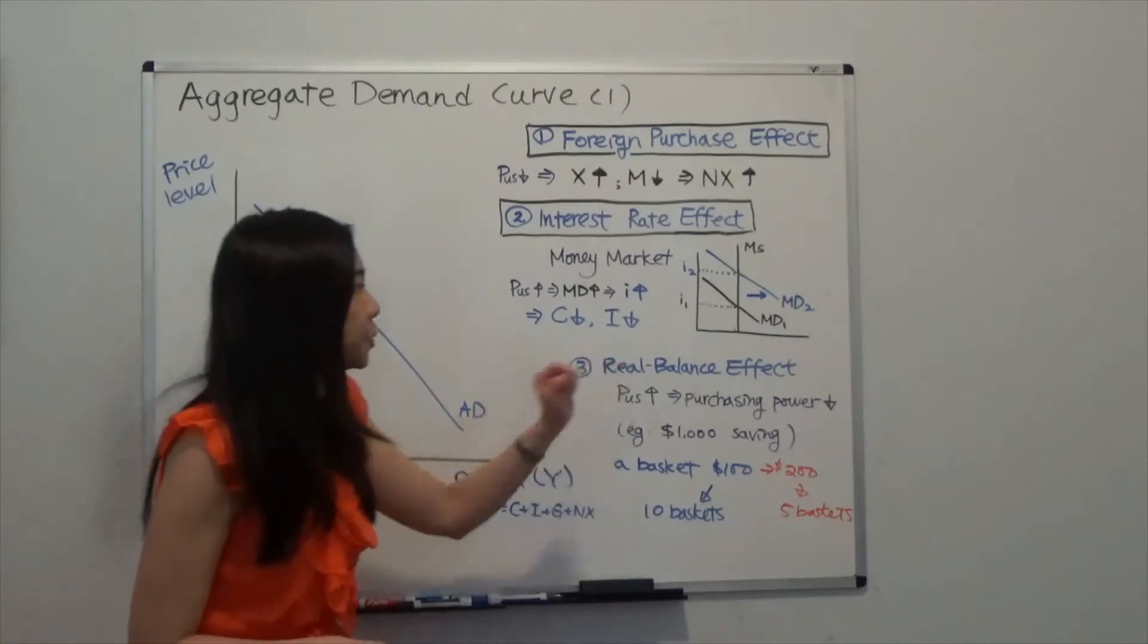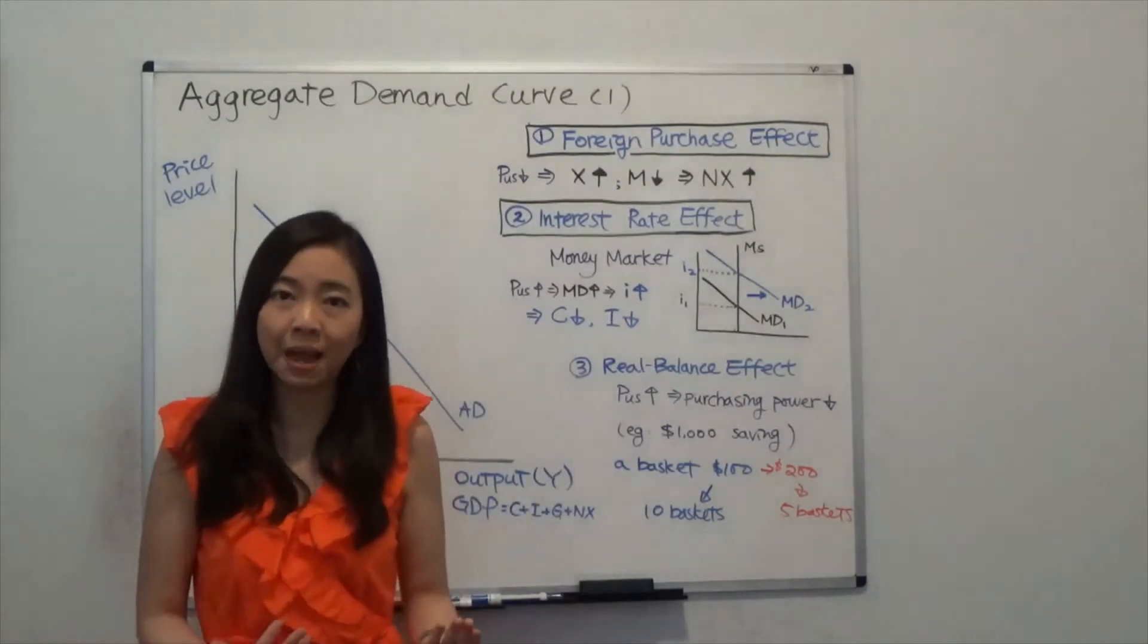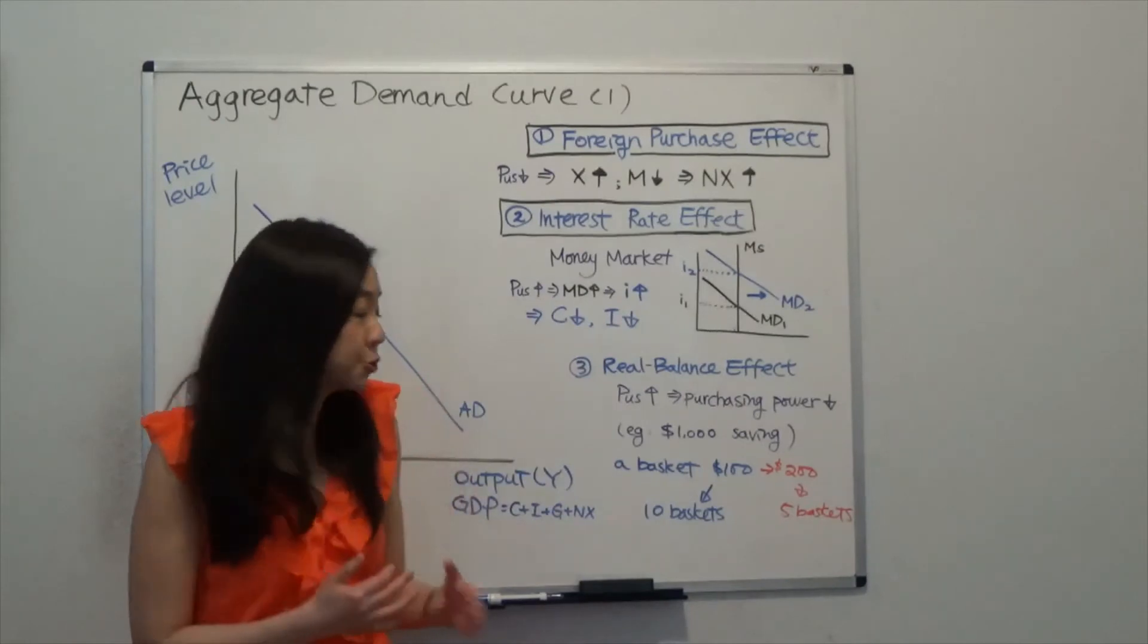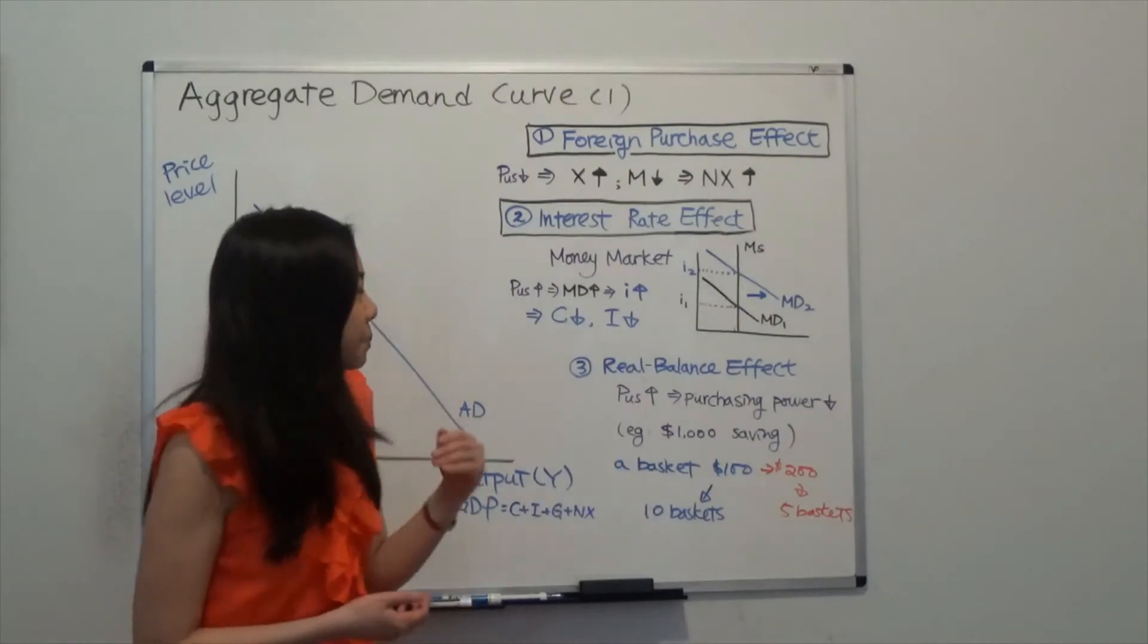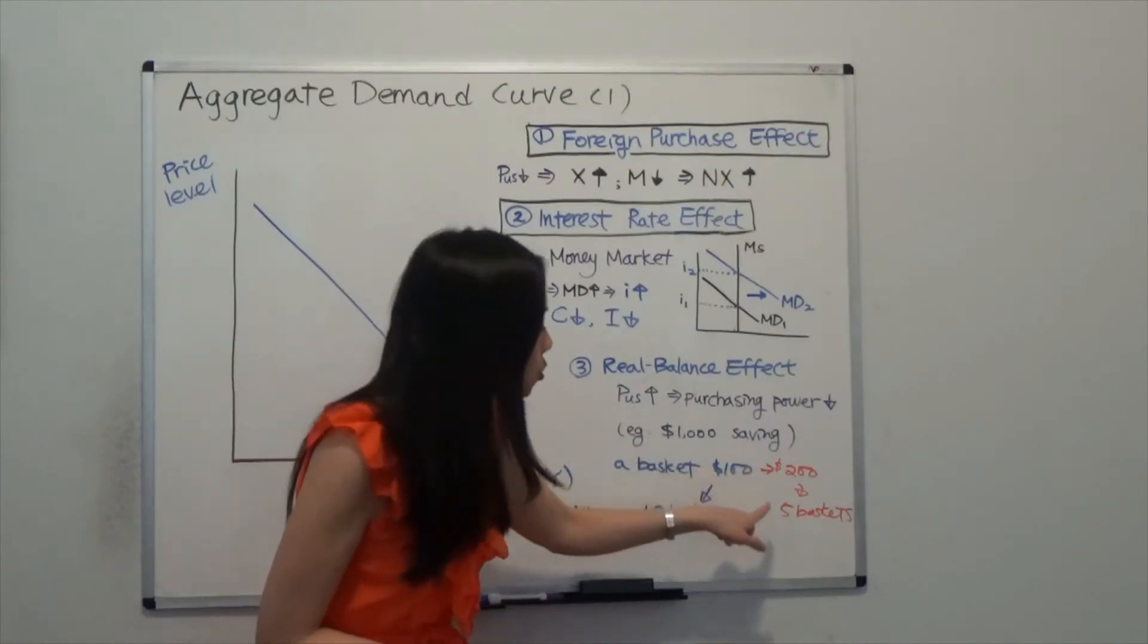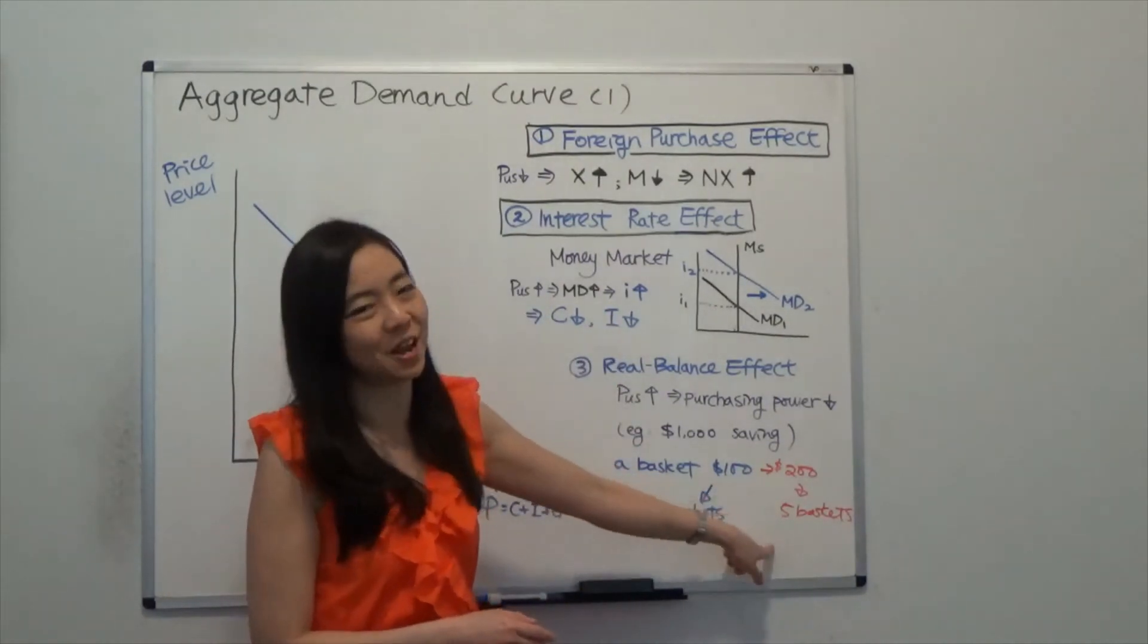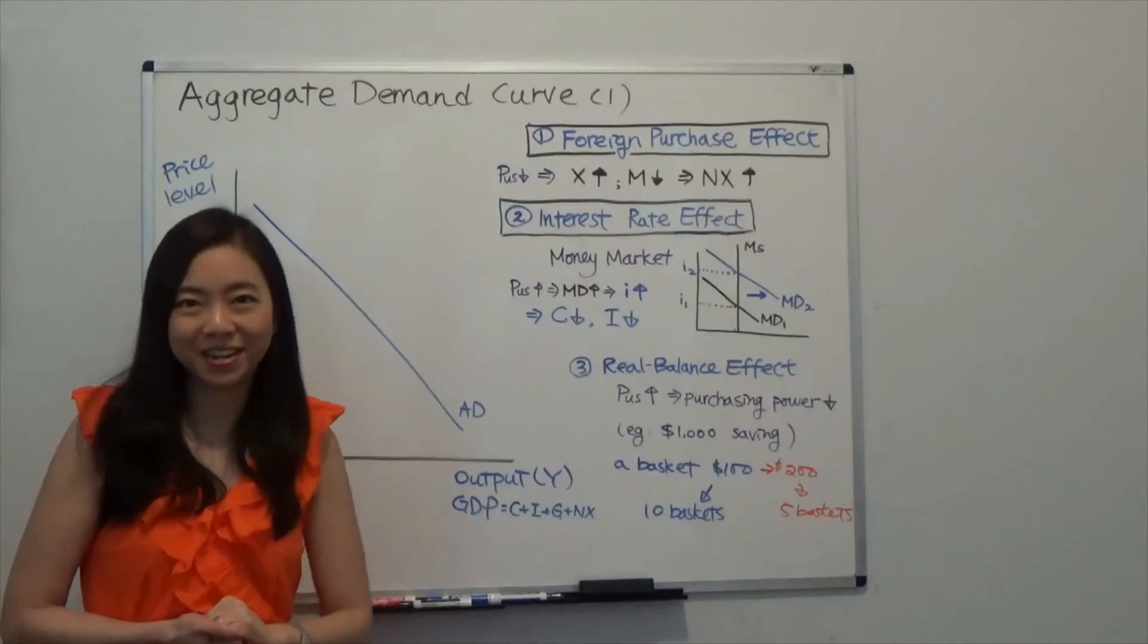The third is real balance effect. Think about this: when your price level goes up, that means your purchasing power goes down. Therefore, say if you had $1,000 saving and the price of a basket used to be $100, then in that case you could afford to buy 10 baskets. But now, because the price level goes up, say to $200, then with $1,000 saving you could only afford to buy 5 baskets. So you can see, when the price level goes up, the number of baskets goes down. Therefore, that's the reason why we have a negatively sloped aggregate demand curve.